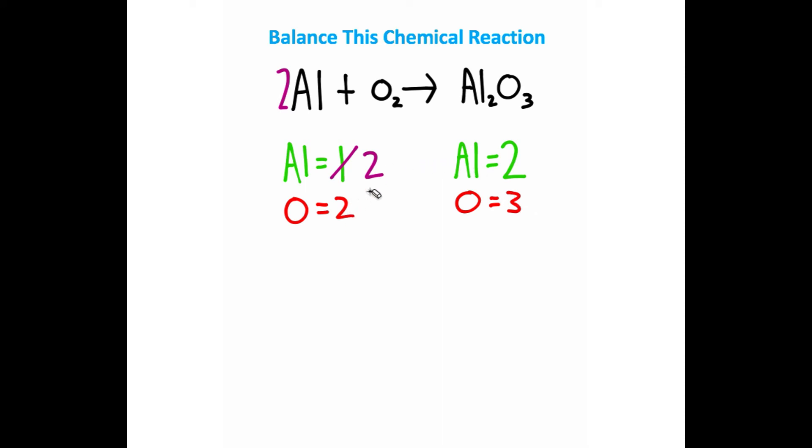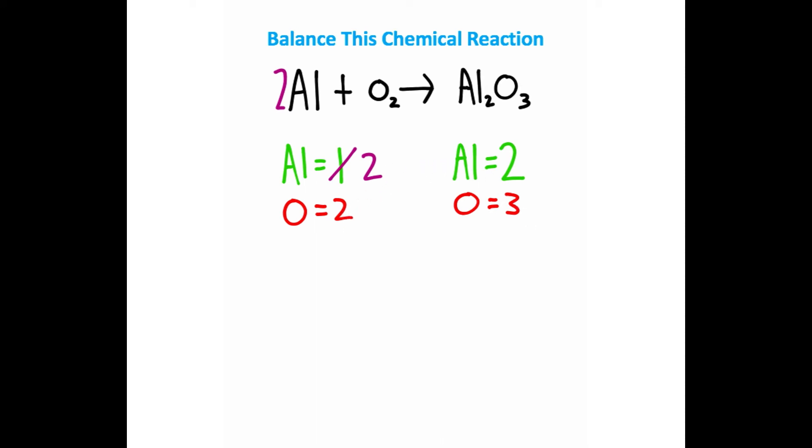The least common multiple between 2 and 3 is 6. So what I can do is take a 3 and put it as the coefficient on these two oxygens here. And by the way, you can only change the coefficients in front. You can't actually change any of these subscripts down here.